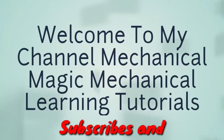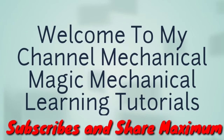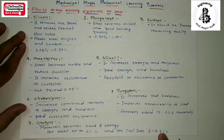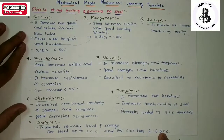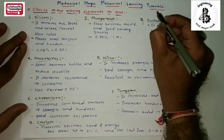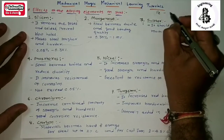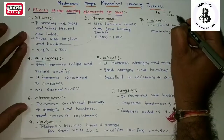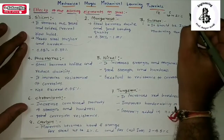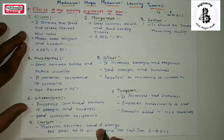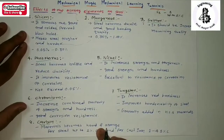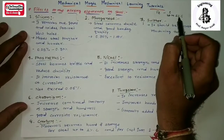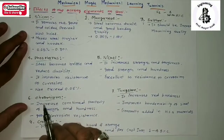Welcome to my YouTube channel Mechanical Magic Mechanical Learning Tutorials. In this video I am talking about the effects of different alloying elements on steels. Basically in steels the main constituents are Fe and carbon. In the category of steels, up to 2% carbon is present in iron. By the addition of different alloying elements rather than iron and carbon, the properties of the materials increase as per the requirements of the application.